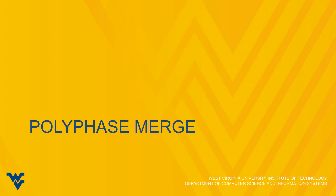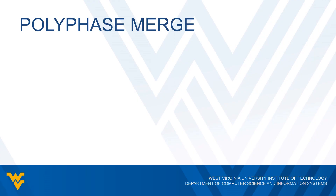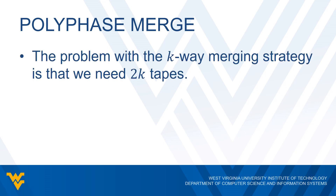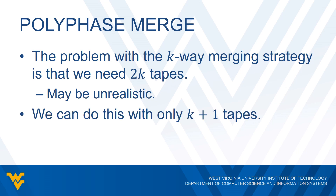We'll now take a look at what we call the polyphase merge. There is a problem with the K-way merging strategy we just discussed — the problem is we need two K tapes, which may be unrealistic. So what we're saying is we actually only need K plus one tapes instead of two K tapes.